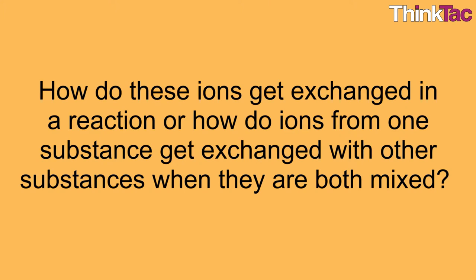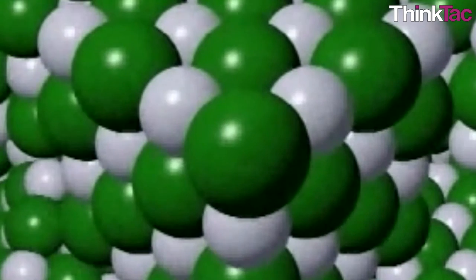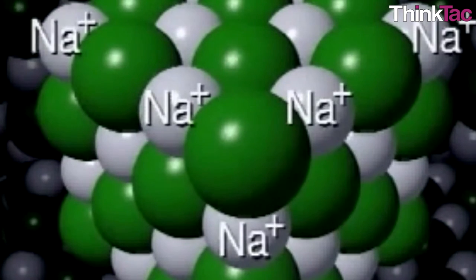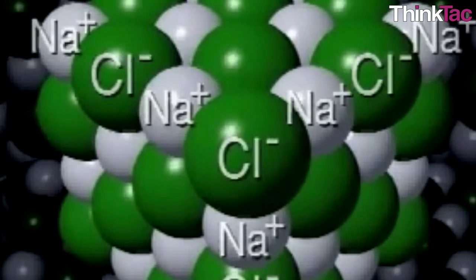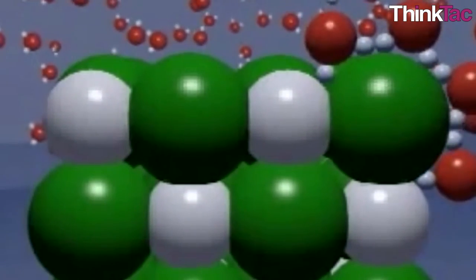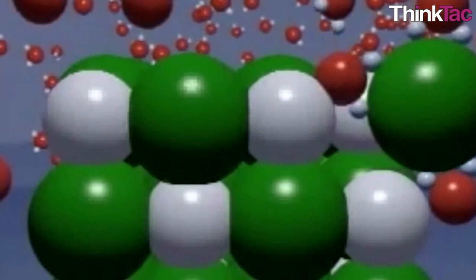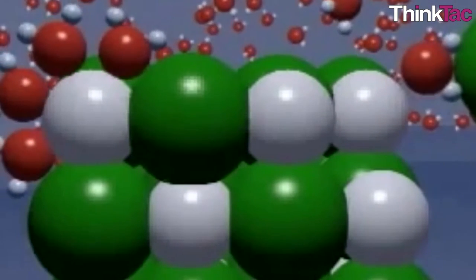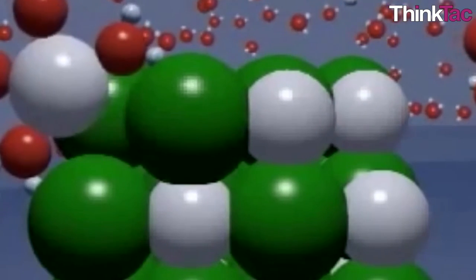How do these ions get exchanged in a reaction or how do ions from one substance get exchanged with other substances when they are both mixed? This process is known as ion exchange. For example, when table salt is mixed in water it dissolves completely. This happens because the ions from the salt are freed to a considerable extent from the restraints that hold them within the rigid array of the crystal, and they move about in the water with relative freedom.